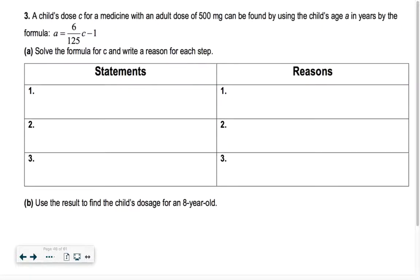So a child's dose C for a medicine with an adult dose of 500 milligrams can be found by using the child's age A in years by the formula A equals 6 over 125 times C minus 1. So solve the formula for C and write a reason for each step. So we're trying to get the C by itself. That's what it means by solve the equation for C. So if we want to get this C by itself, what's the first thing that I have to do?